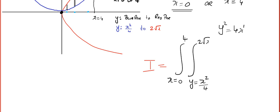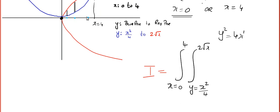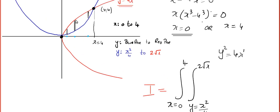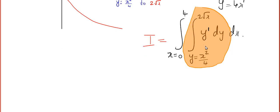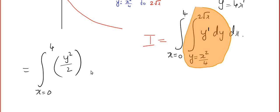One more thing: whenever we draw a vertical strip, y will have variable limits. The function is y, so we write dy dx. y means y to the power 1. So we get the integral from x = 0 to 4 of [y²/2] evaluated from y = x²/4 to y = 2√x, dx.